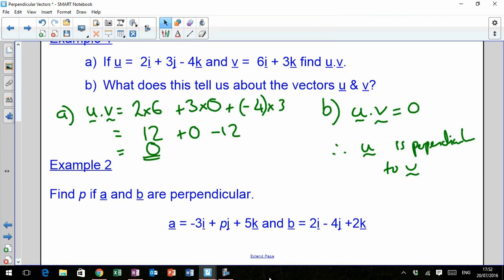Why don't you give that example 2 a try just now? If A and B are perpendicular, then we know that A dot B has to equal 0. Which means that negative 3 times 2 from your I's, add P times negative 4 from your J's, plus 5 times 2 from your K's is equal to 0.